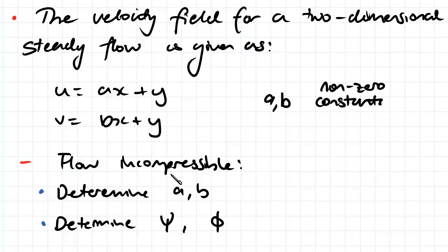We also know that the flow is incompressible and we need to determine a and b and to determine the stream function and the velocity potential function.